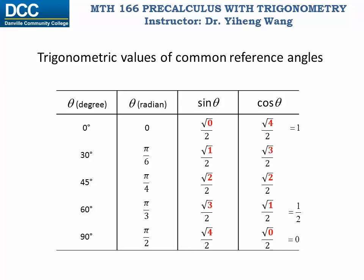Tangent theta is sine theta over cosine theta. Cosecant, secant, and cotangent theta are the reciprocal functions of sine, cosine, and tangent respectively. That's how we memorize the trigonometric values of these special angles.